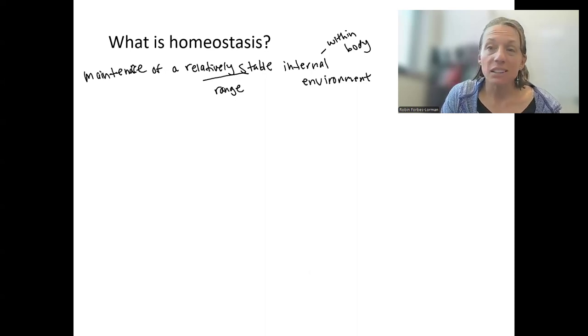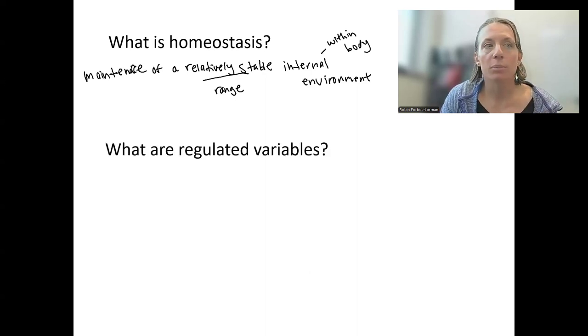Homeostasis requires regulating certain variables within a certain range. So what are variables that need to be regulated? What are the regulated variables in our body? These need to be maintained within a certain range. Body temperature - core body temperature is what is sometimes called. The temperature of my finger isn't regulated, but our cores are.